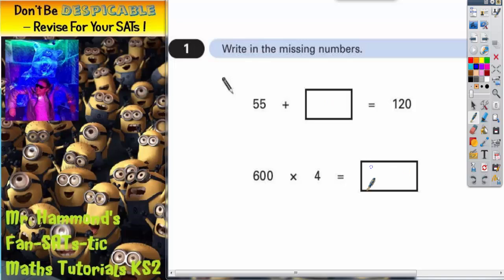So let's find one where the answer is missing first. We've got 600 times by 4. Lots of ways you could do this. You could say, well, times by 4, I double the number and then double it again. So double 600 is 1,200. Double 1,200 again is 2,400. So that is your answer, 2,400.